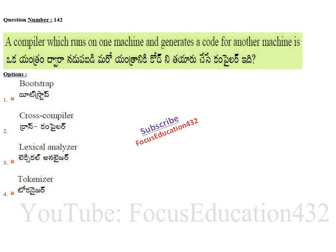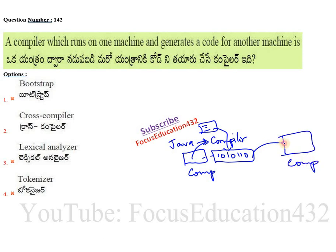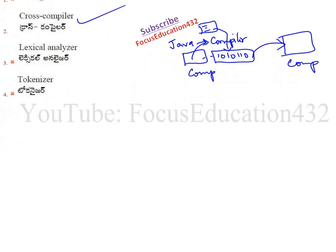Next question: a compiler which runs on one machine and generates code for another machine. A compiler is software — when you write a program and compile it, it converts the code into machine-understandable 1s and 0s. For example, the Java compiler converts your program into ones and zeros. A compiler that generates code usable on another machine is known as a cross compiler.